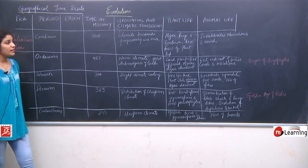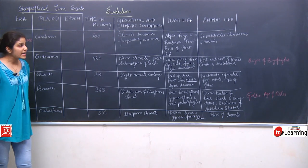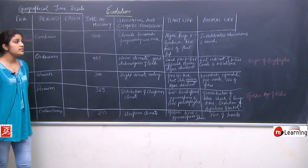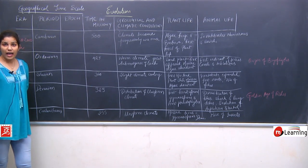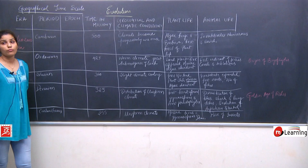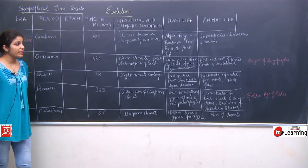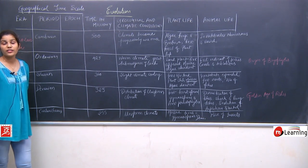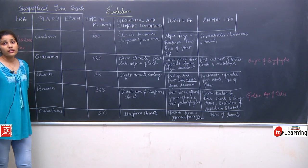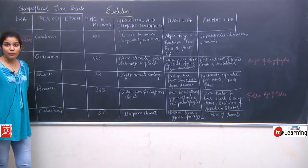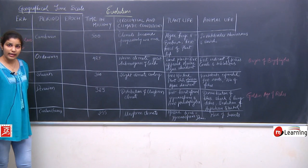In animal life during the Ordovician period, the first indication of fishes, corals, and trilobites appeared. Trilobites are arthropods — a kind of primitive insect. So in the Ordovician period, primitive fishes were evolving, corals started to appear, and arthropods like trilobites were also appearing.